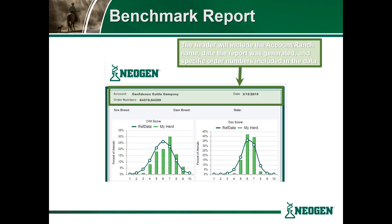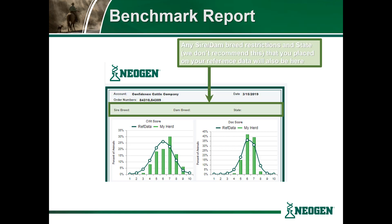You will notice on the header of your report your account or ranch name — in this case Confidence Cattle Company — will appear, as well as the date the report was generated and the order numbers included. Also, if you place any sire or dam breed restrictions or state restrictions on your reference data, it will also be located in the header.